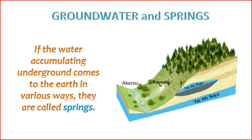7. Human Use — throughout history, human communities have often settled near springs due to the reliable source of freshwater they provide. Springs have been important for drinking water, irrigation, and sustaining communities. 8. Types of Springs — there are different types of springs based on their characteristics, such as artesian springs, which occur when groundwater is under pressure and rises to the surface without pumping. 9. Cultural Significance — springs have cultural and spiritual significance in many societies. They are sometimes considered sacred or are associated with rituals and traditions.